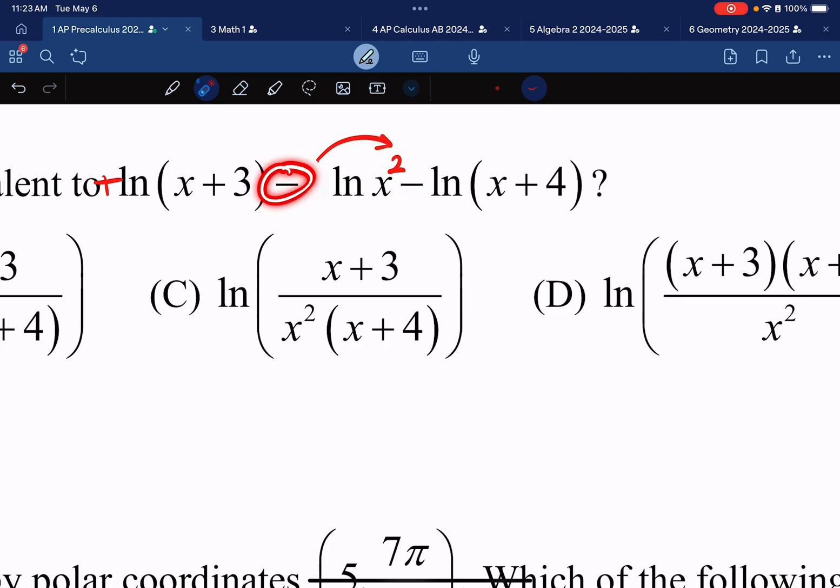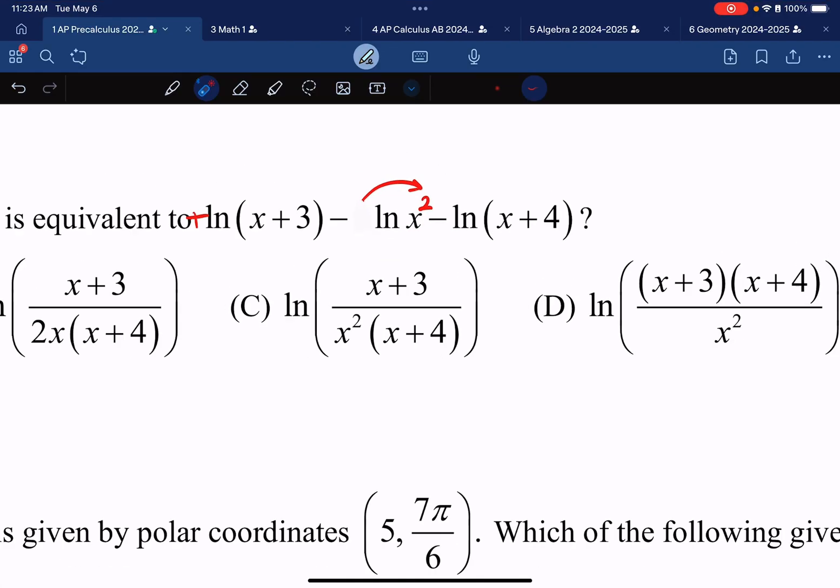So this really says the natural log of x squared. And because it is preceded by a negative, this x squared term is going to live in the denominator.